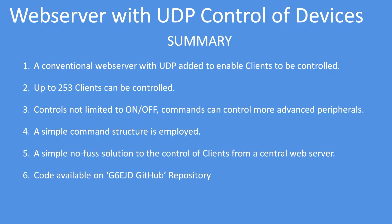In summary, it's a conventional web server combined with the UDP protocol. Up to 253 clients can be controlled on a typical sub-network. Controls aren't limited to on/off — you can adapt the command structure to send more complex commands. The code is available in my usual place, the G6EJD GitHub repository. I hope you find the project useful.